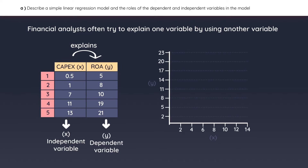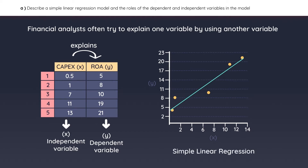We can actually plot the relationship between X and Y in a scatter plot. The first company would be plotted here, then the second company, and so on. There appears to be a positive relationship between X and Y, and we can actually estimate this linear relationship with a line of best fit. The process of coming up with this line is called linear regression — specifically simple linear regression, because we only have one independent variable.